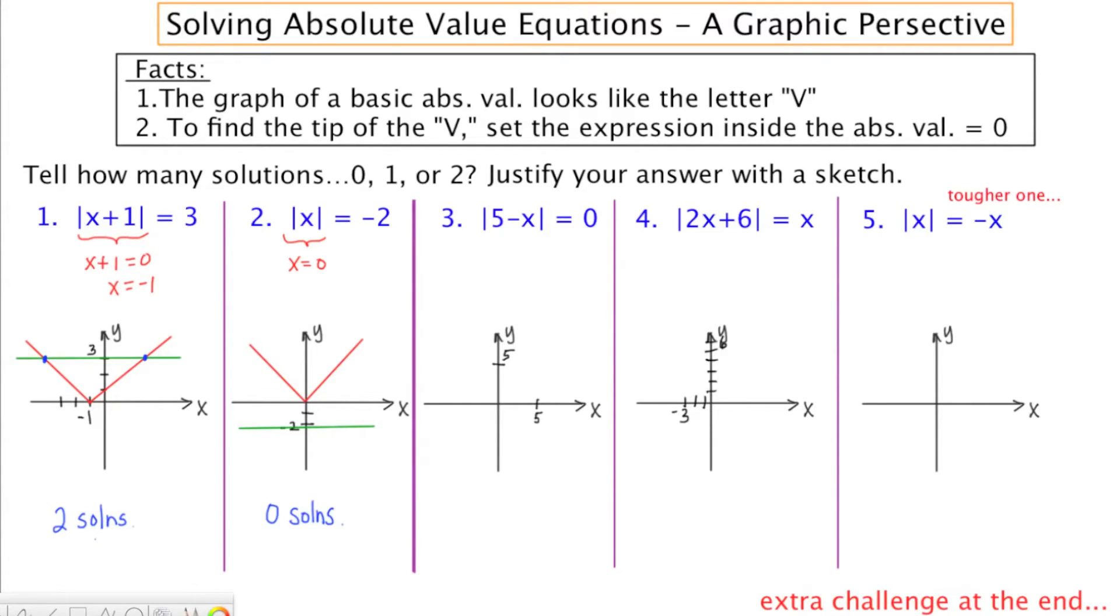In example three, the absolute value of 5 minus X equals zero. We have on the left side an absolute value expression. Again, its graph is going to look like a V.